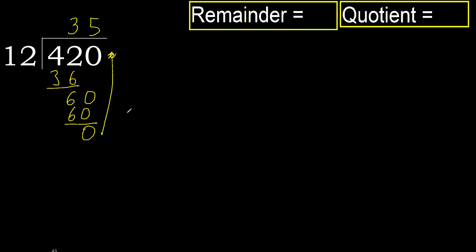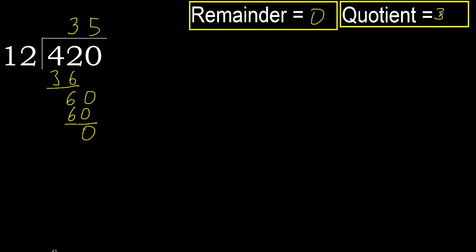There is no next number, therefore we finish. 420 divided by 12 is 35.